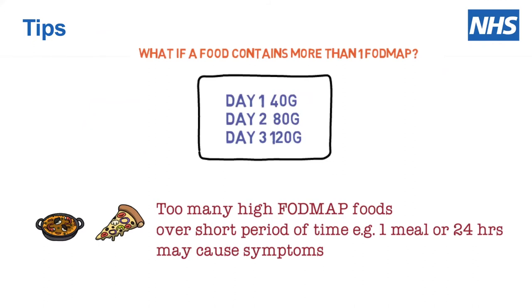Don't forget that too many high FODMAP foods over a short period of time — in one meal or in a 24-hour period — may cause symptoms. It may be that on an individual basis each food is tolerated very well, but when you start to combine them or have a high FODMAP meal, you may run into trouble. For example, if you had leek and potato soup with garlic bread and a bowl of pasta, that's an awful lot of FODMAPs in one meal — despite each of those foods appearing well tolerated individually. It's all about how much you can get away with before you get symptoms.